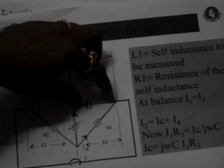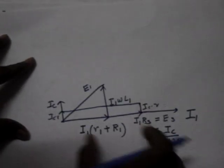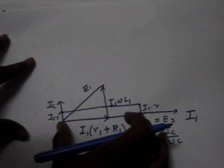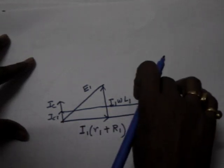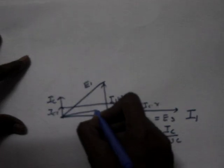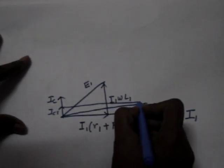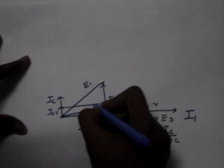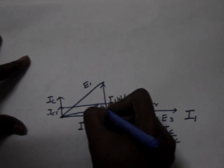So see, this E3, Ic into Xc plus this is equal to E4. That is, we have E3, we have Ic into R drop. So the resultant is E4.